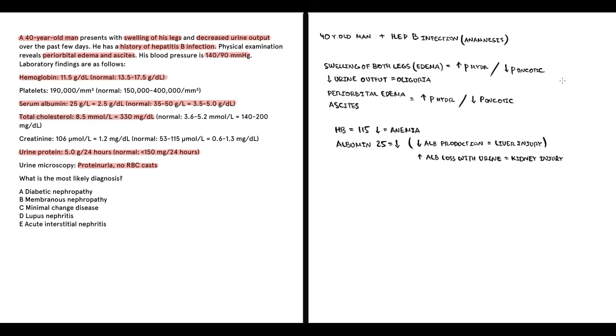By low albumin level we can explain his symptoms. Because decreasing albumin causes decreasing oncotic pressure, which causes leg edema, periorbital edema and ascites. And if we take into account his oliguria, we can say that most likely low albumin level is caused by kidney injury. So the problem in this case is definitely with kidneys.